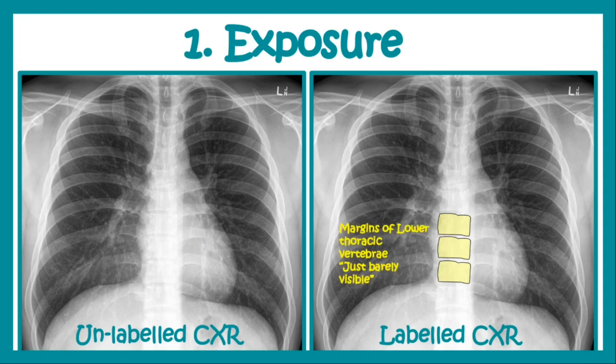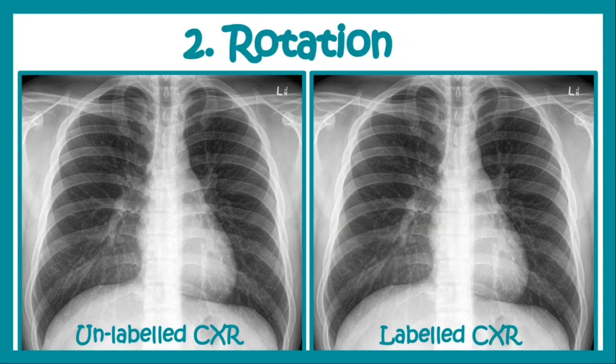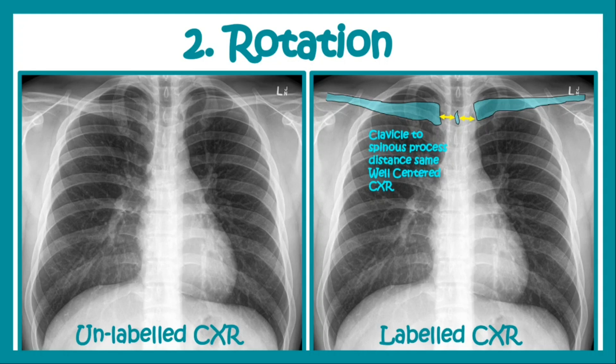Then we go for rotation. During clicking the x-ray the patient should be aligned properly and there should not be any rotation. To check for rotation we first identify the clavicles and identify the spinous process of the vertebra just at the level of the clavicle. Then we determine the distance between the spinous process and the clavicles on both sides. If the distance from the clavicle to the spinous process is the same on both sides, it is indicative of a well-centered x-ray; if not, there is some degree of rotation.